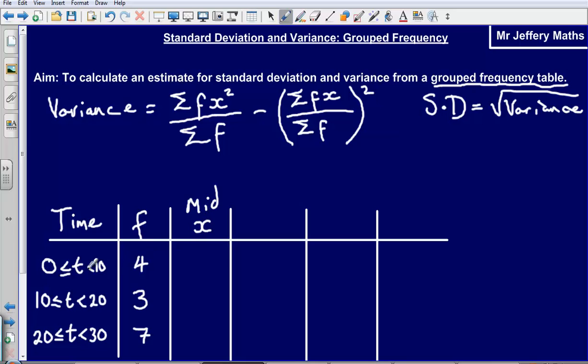So let's first of all work out our midpoints for each of our class intervals. So we've got 5 for this one, next 15, next we've got 25.